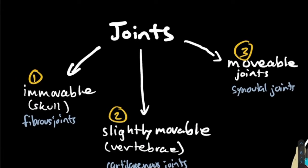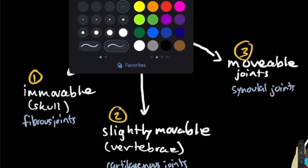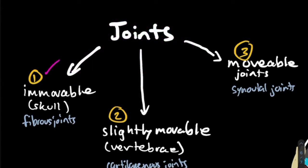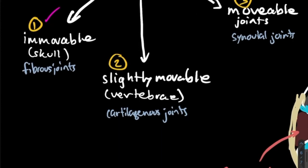There are three overall classifications of joints for the MCAT. First, immovable joints — these are fibrous joints like those in your skull. They fuse as you grow and after that, they cannot move. Another example of an immovable joint is your sacrum and coccyx at the end of your spine — that joint is completely fused and doesn't move at all.